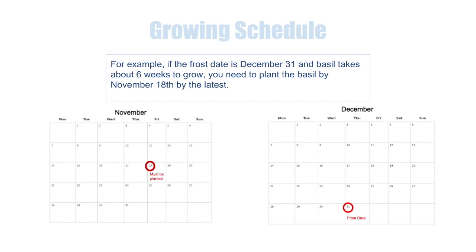For example, if the frost date is December 31st and the basil takes about six weeks to grow, you need to plant the basil by November 18th at the latest.